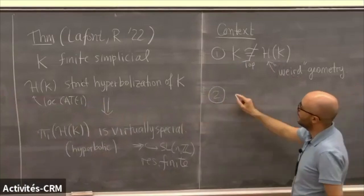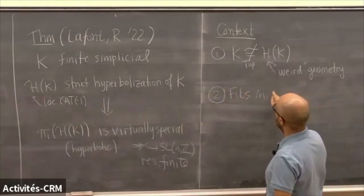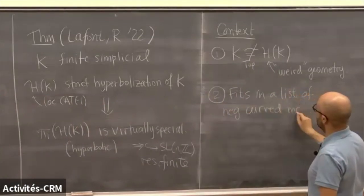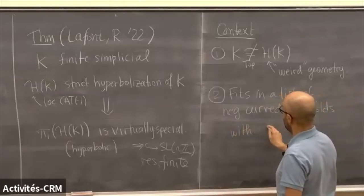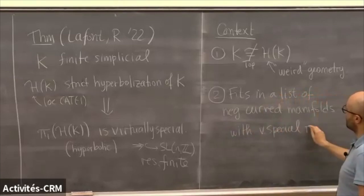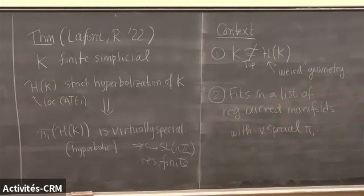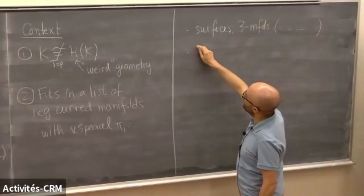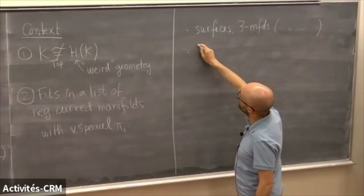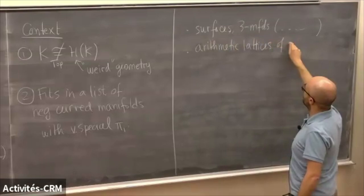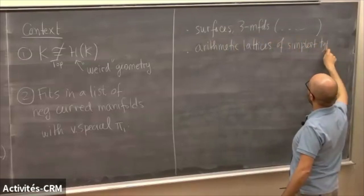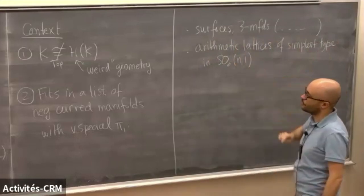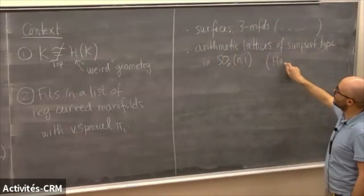This result fits in a list of other results where you have negatively curved manifolds with special, virtually special, fundamental group. For instance, we all know the story about surfaces and three-manifolds. More generally, in higher dimension, things like arithmetic lattices of simplest type — the ones you construct from quadratic forms over a number field — in the isometry group of real hyperbolic space, these are virtually special. This is a result of Agol and Wise from 2012.